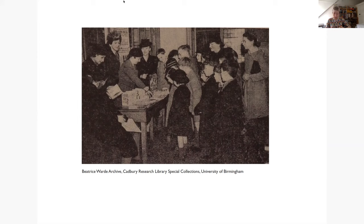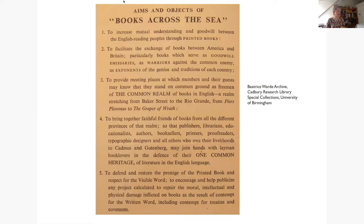The five early aims of the organization were almost certainly written by Beatrice Ward, as they reflect her interest in type, printing, and publishing as well as her tone of voice. Two aims stand out: in the second aim she talks about books being used as 'goodwill emissaries,' fostering goodwill and understanding between the two countries and countering Nazi propaganda. She also weaponizes books in this aim, referring to them as 'warriors' — and 'books as weapons' was quite a well-used phrase at the time.